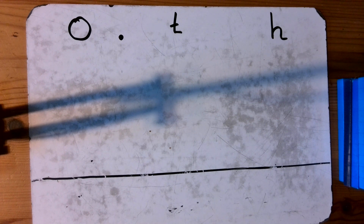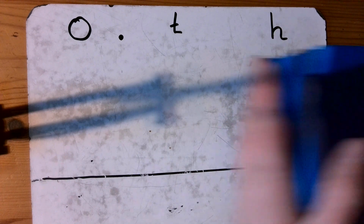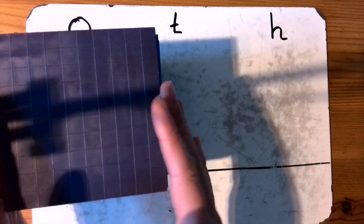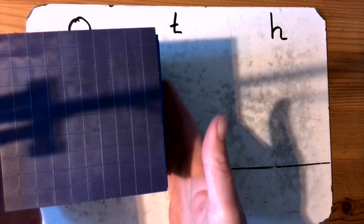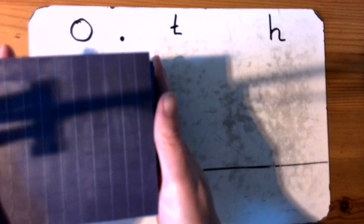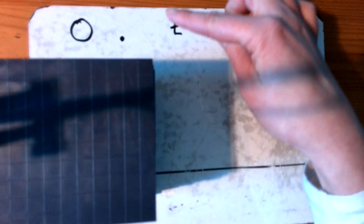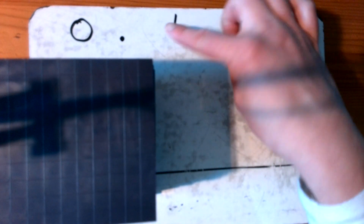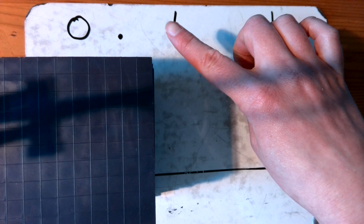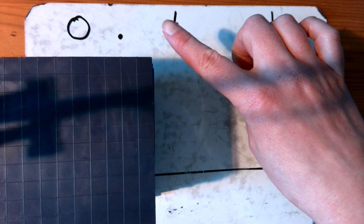So we're going to start off by getting our whole. Here we have our whole, so we've got one whole. As we discussed before, a decimal number is a number that is less than 1 and greater than zero.